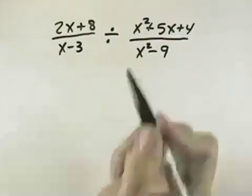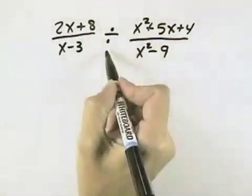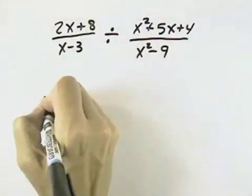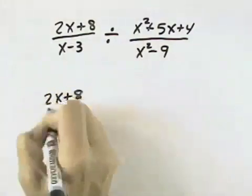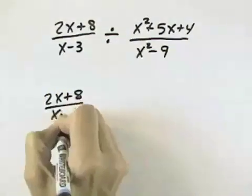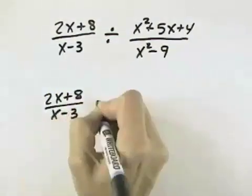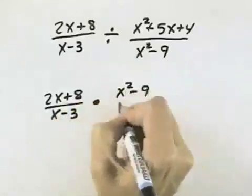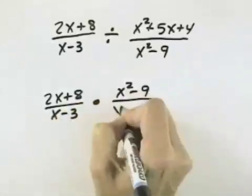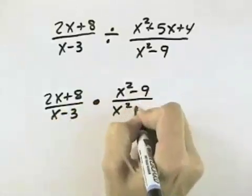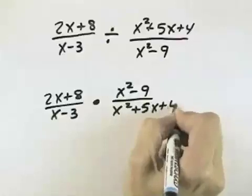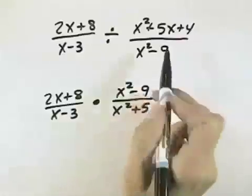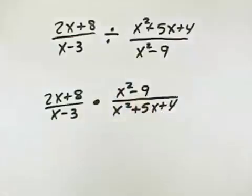Here we want to perform the indicated operation of division, and then simplify our answer. In order to divide fractions, what we do is leave the first fraction the same, but we flip the second one, and the operation becomes multiplication. So we've left our first fraction the same, and now have multiplication by the reciprocal of our second fraction.